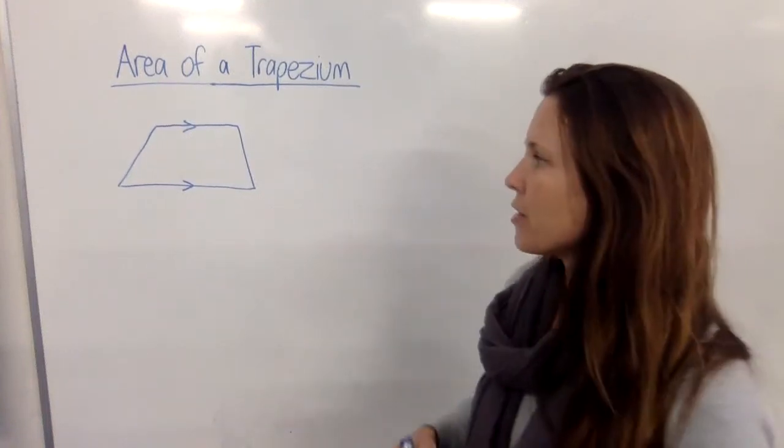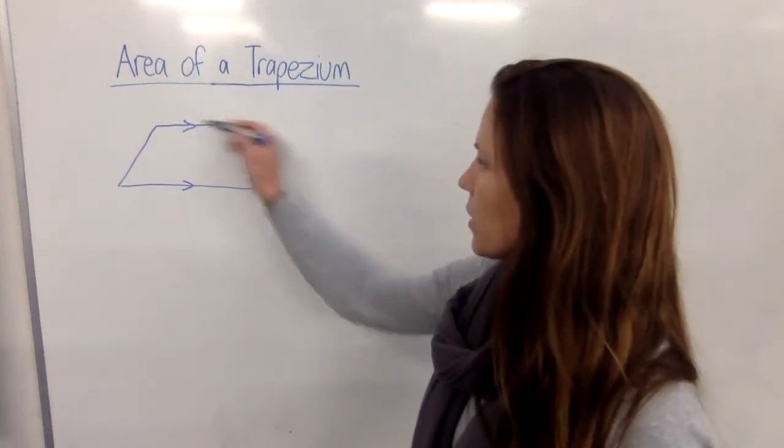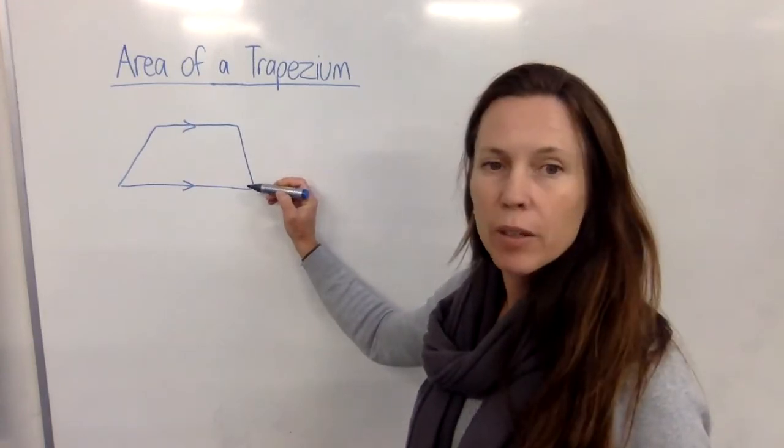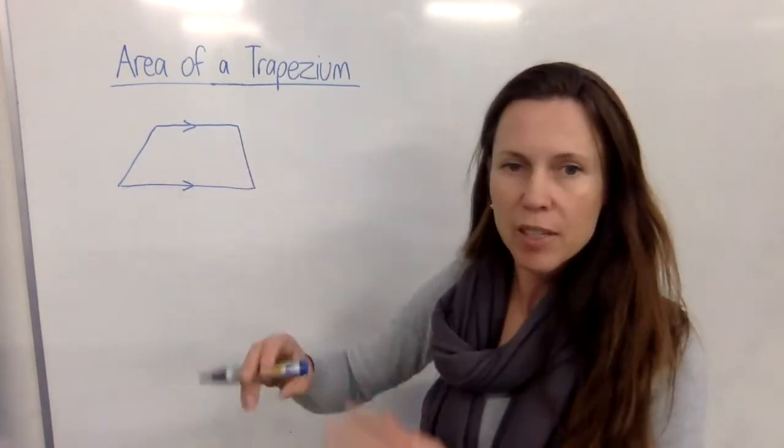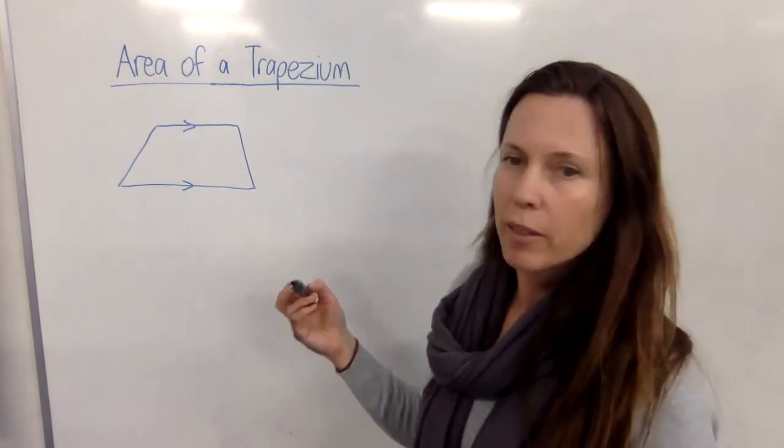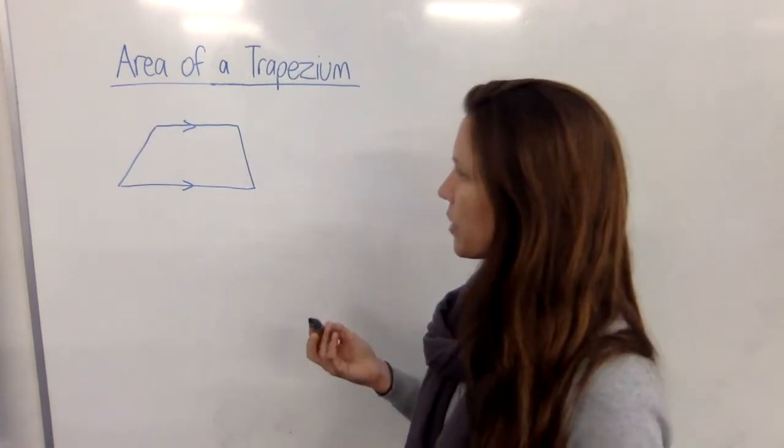Now to find the area of a trapezium we need to first know what a trapezium is. It has one set of parallel lines, and then the other two sides have nothing special going for them. They can be any length and they're not parallel with anything else or perpendicular to anything else.